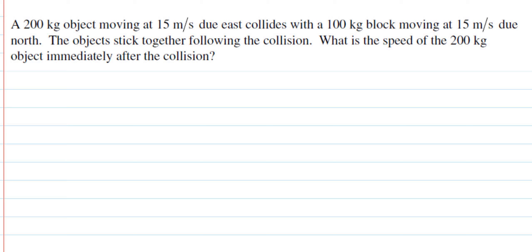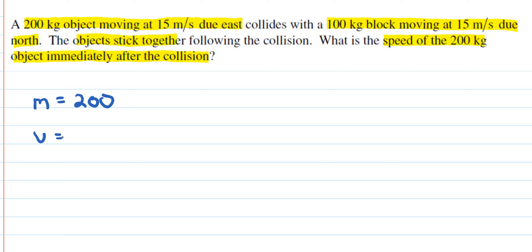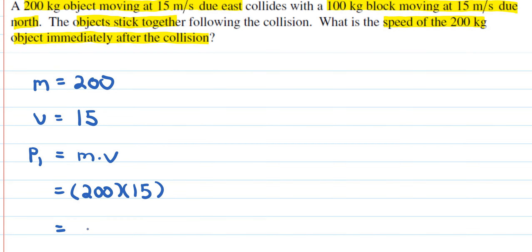Here's another similar collision problem with different numbers. We have a 200 kilogram object moving at 15 meters per second due east, and it collides with a 100 kilogram block moving at 15 meters per second due north. The objects stick together, and we want to find the speed of the combined object after the collision. The first object's momentum P1 is mass times velocity: 200 times 15, giving 3000 kilogram·meters per second going east.